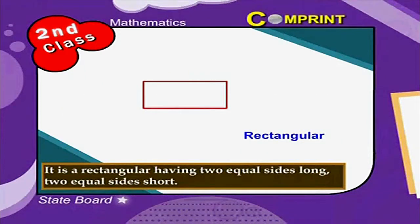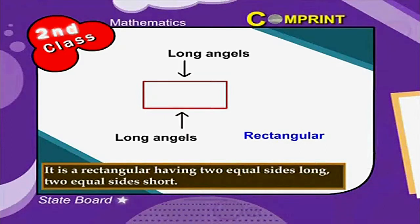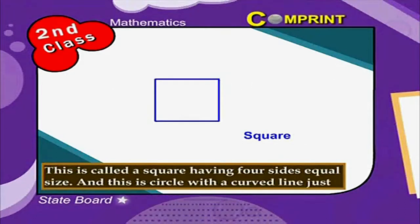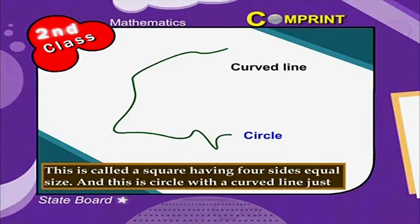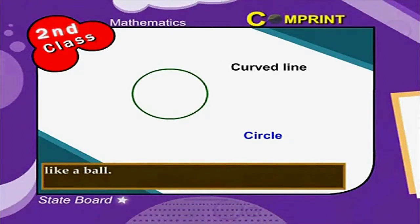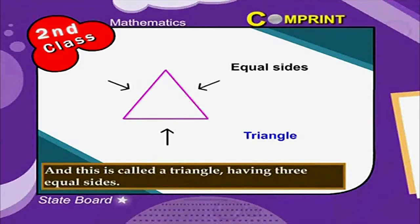It is a rectangle having two equal sides long and two equal sides short. This is called a square having four sides of equal size. And this is a circle with a curved line, just like a ball. And this is called a triangle having three equal sides.